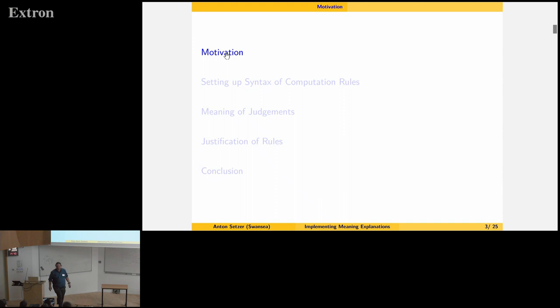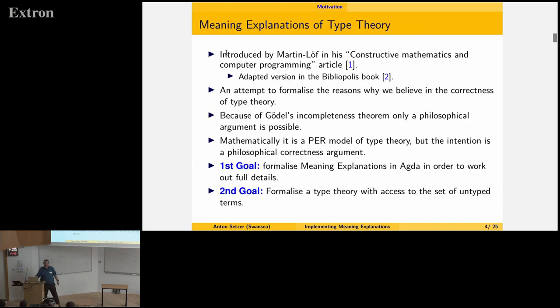This is joint work with Peter Duby. So this somehow goes back, is quite different from most talks we had, because we are going here back to the more proof-theoretic and philosophical foundations of origins of type theory. And what we are doing here in this work is we are looking at Martin Löf's meaning explanations.